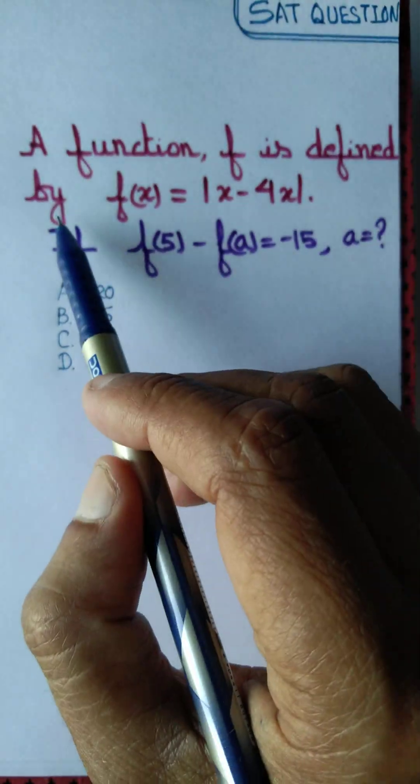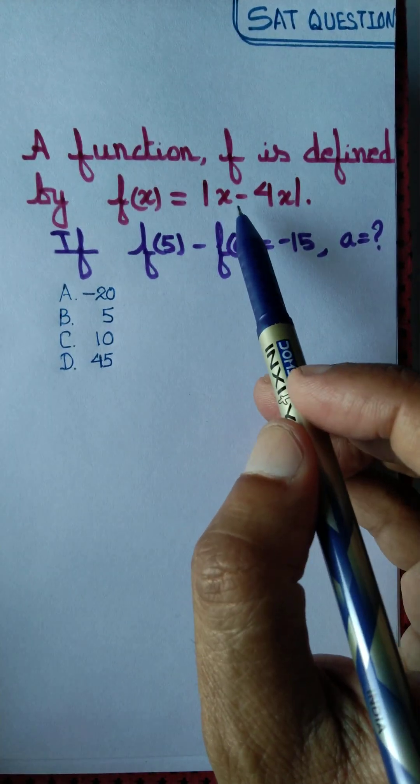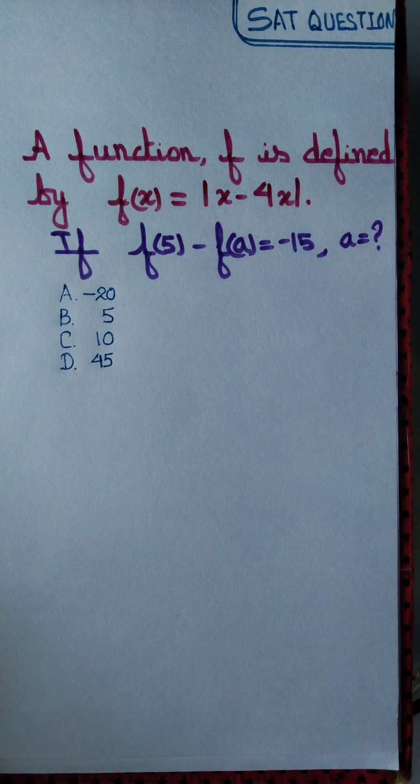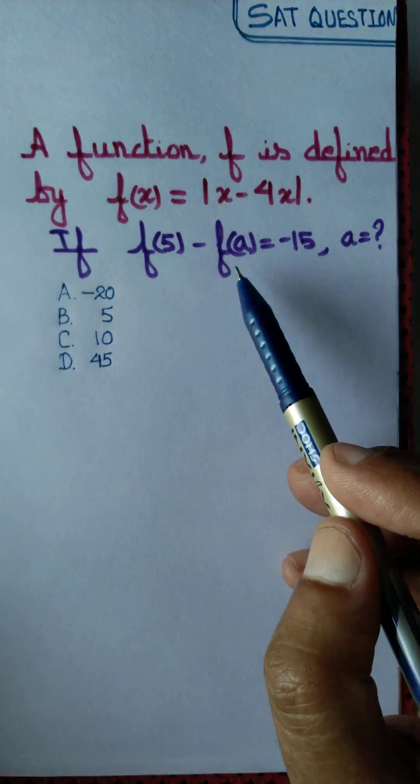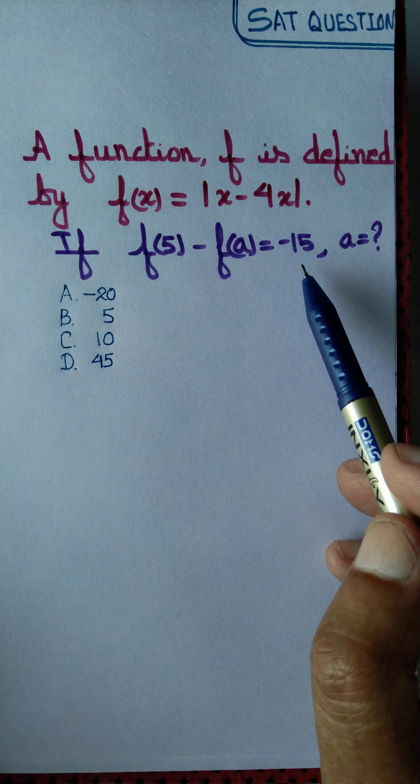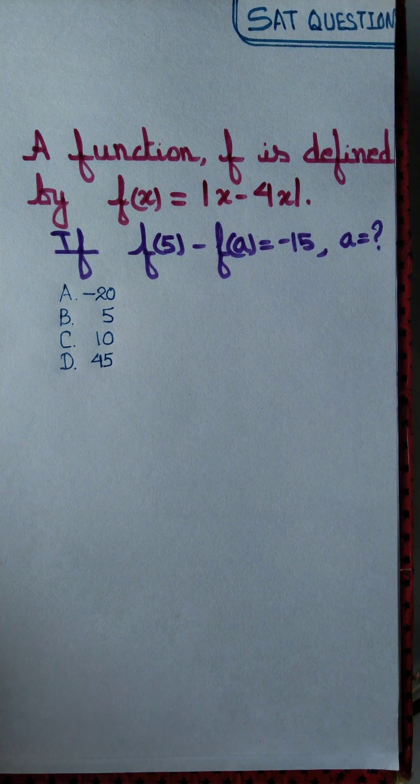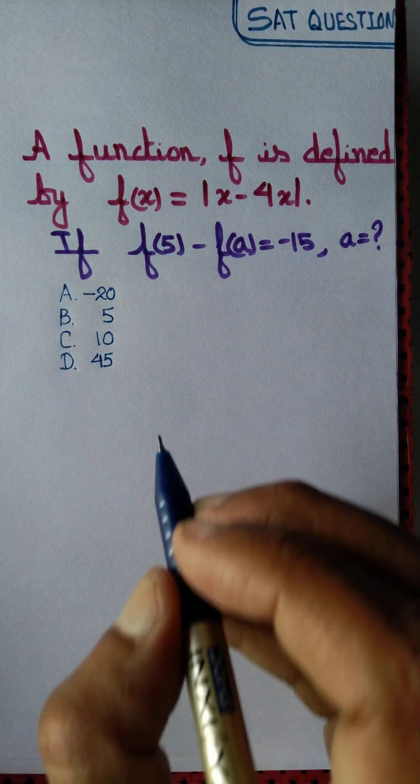A function f is defined by f(x) equal to modulus of x minus 4x, and if f of 5 minus f of a equal to minus 15, can we find the value of a? Of course yes, and let's do it.